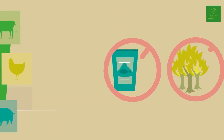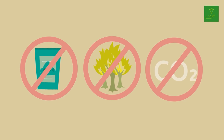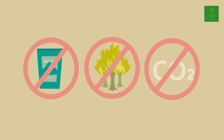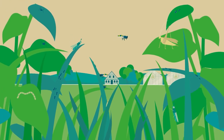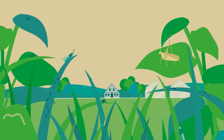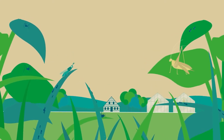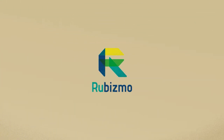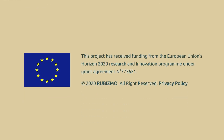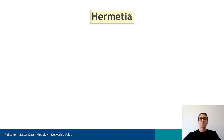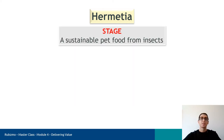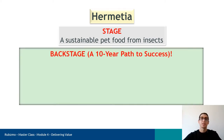Thereby overcoming the shortage of fish meal, forest clearance for soy production, and decreasing CO2 emissions. Furthermore, as there are about 2 million different insects worldwide, the potential of this untapped resource is huge. Looking at the stage and backstage of the company: in the stage, customers see sustainable pet food from insects, but there is a 10-year path to success that has made this company the leading insect producer in Germany.